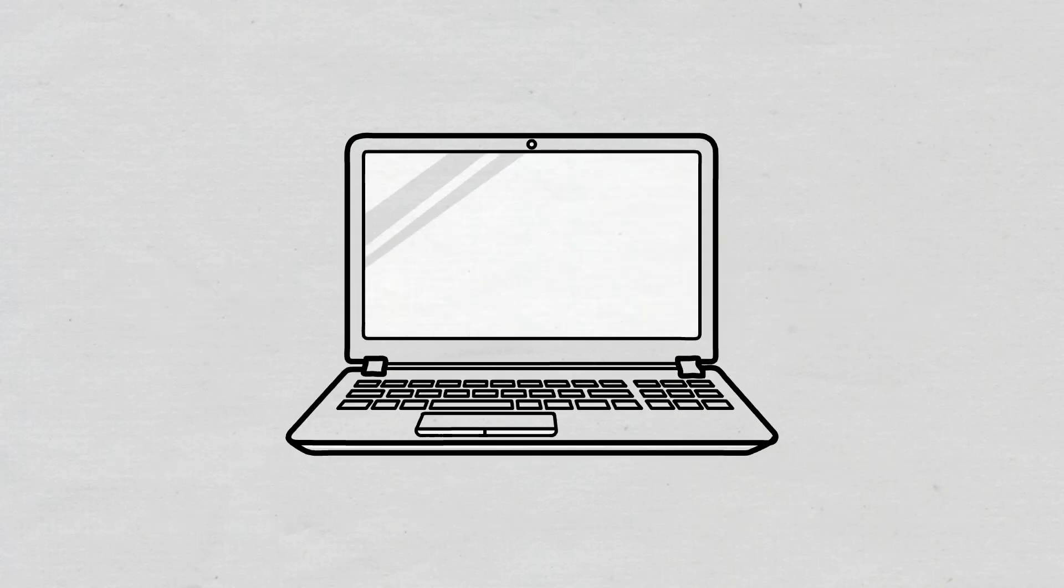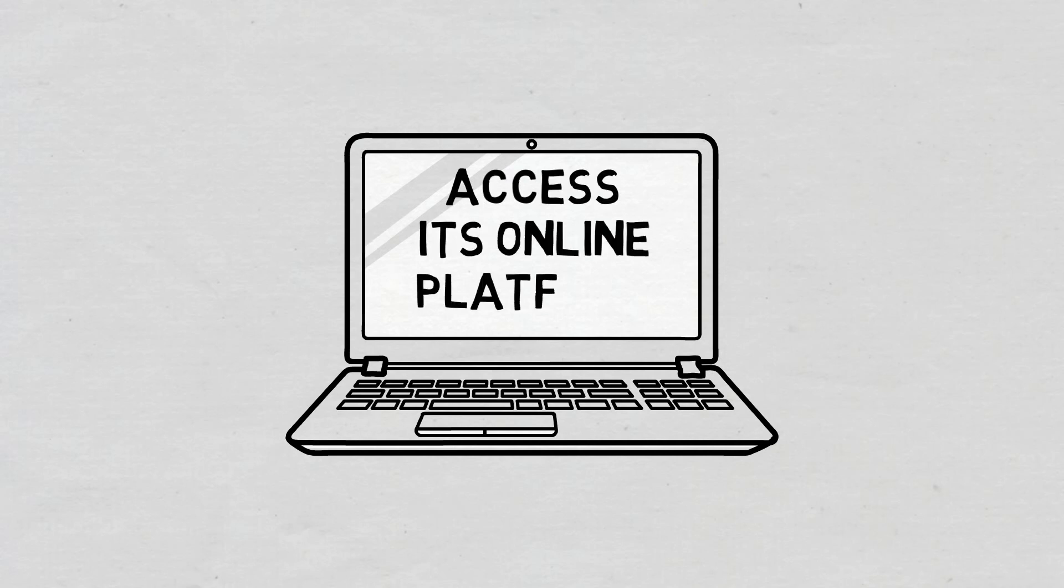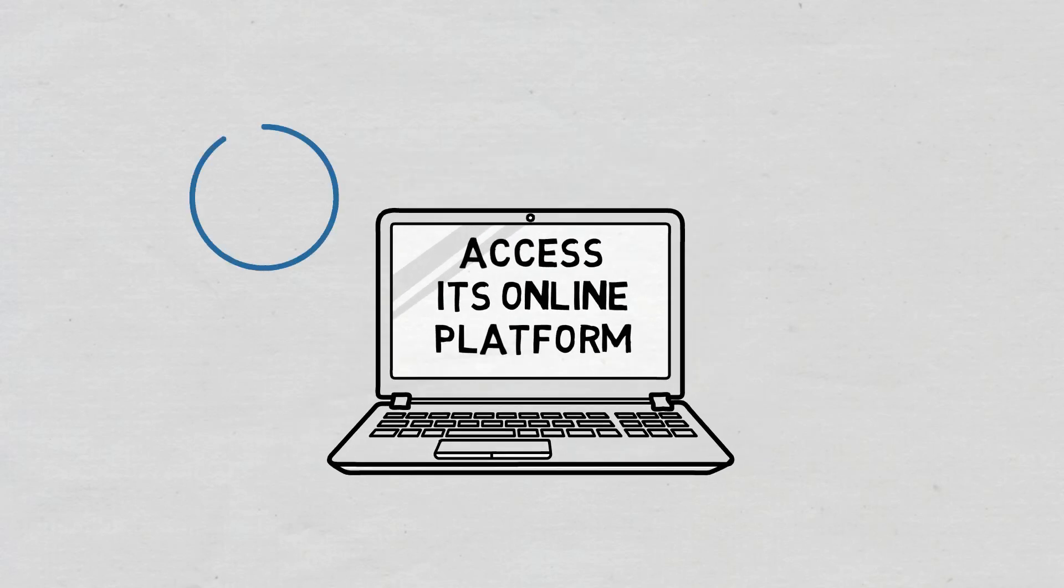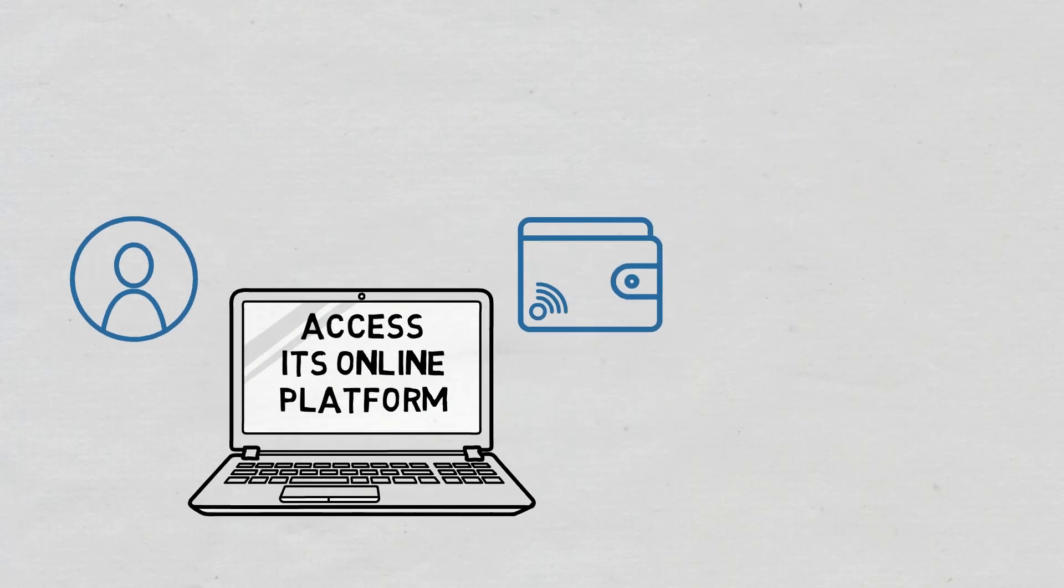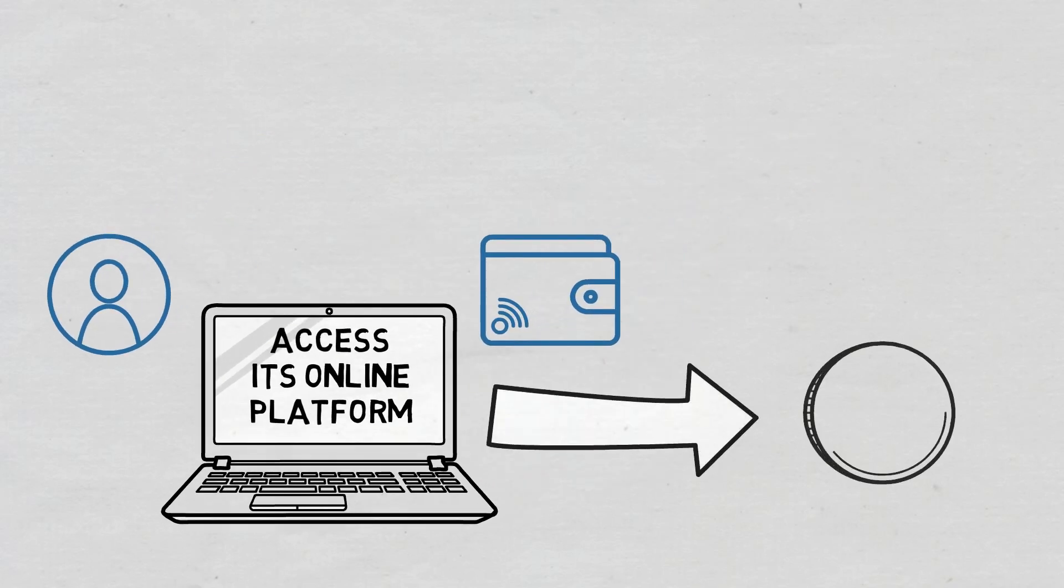How to use an AMM. If you want to successfully use an AMM protocol, you need to access its online platform. At the same time, when creating your account, you'll need to connect a digital wallet to it. Subsequently, you can choose what asset you want to exchange and follow the steps to confirm transactions from and to your digital wallet.